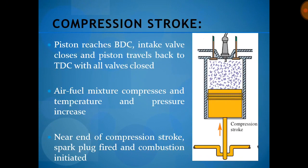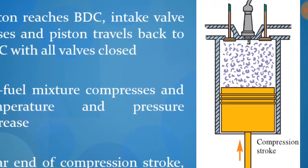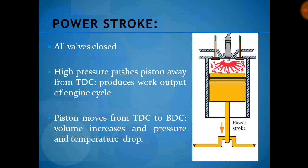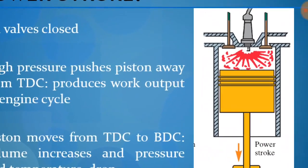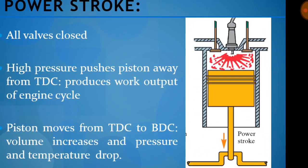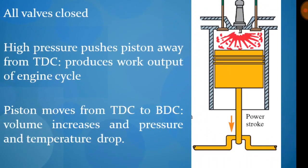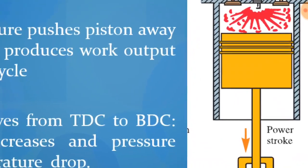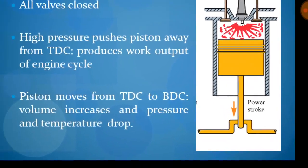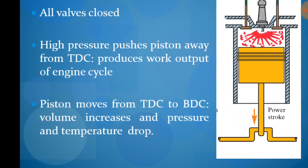Near the end of the compression stroke, the spark plug is fired and combustion is initiated, leading to the power stroke. In this stroke, all valves are closed and the fuel ignites, causing combustion. The temperature and pressure increase by a large amount. The high pressure pushes the piston away from top dead center, producing work. The reciprocating motion is converted into the rotary motion of the crankshaft. The piston moves from top dead center to bottom dead center, the volume increases, and pressure and temperature drop.